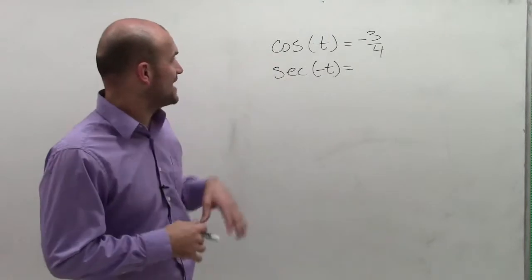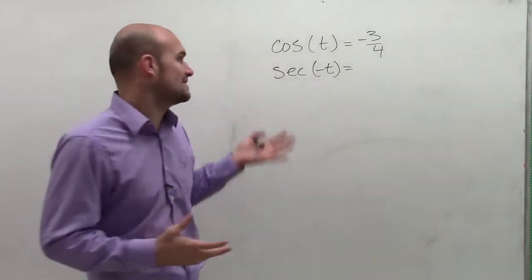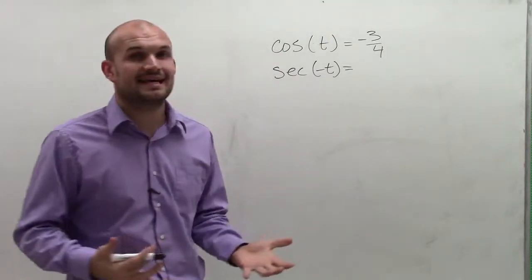Welcome, here we go. So what I want to do is I have cosine of t equals negative 3 fourths, and I want to evaluate for the secant of negative t.